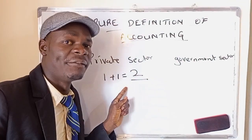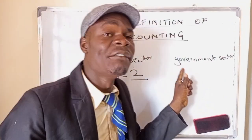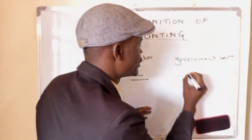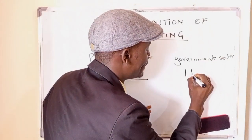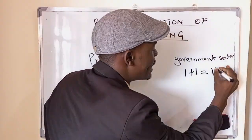In the government sector, accounting means 1 plus 1 is equal to 11.